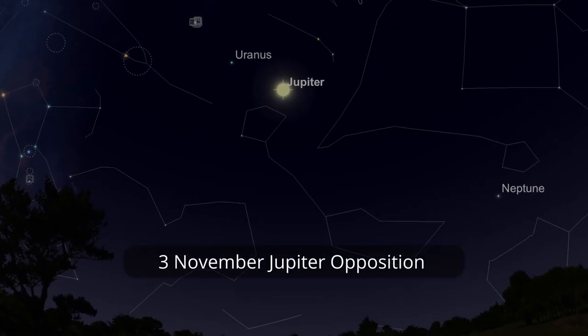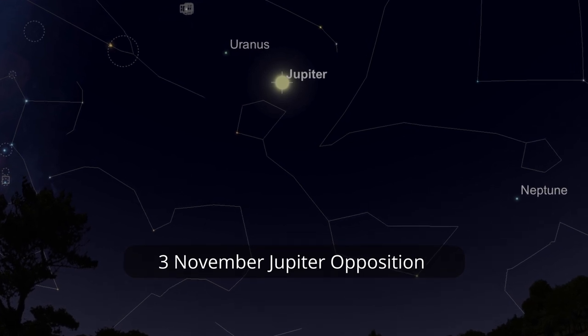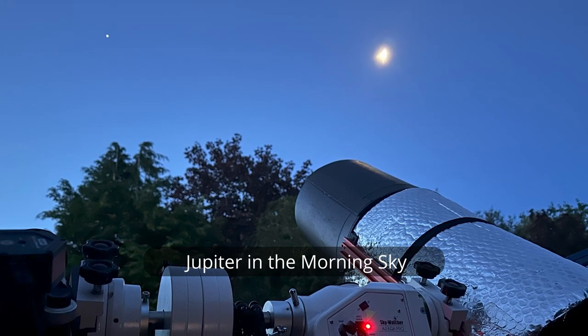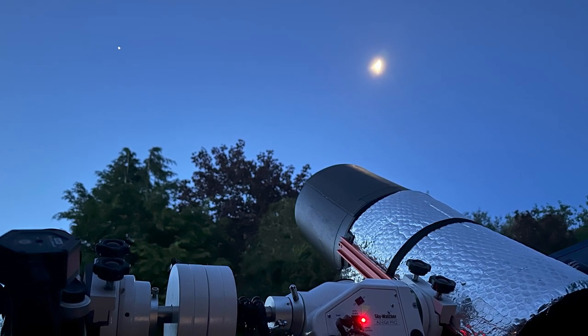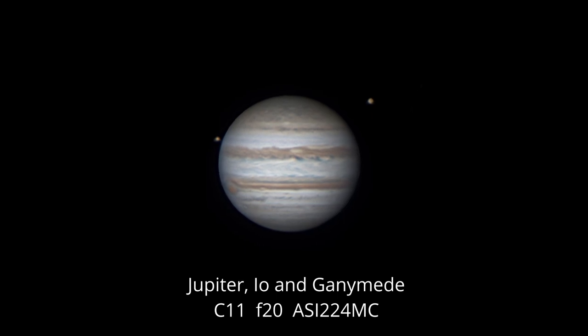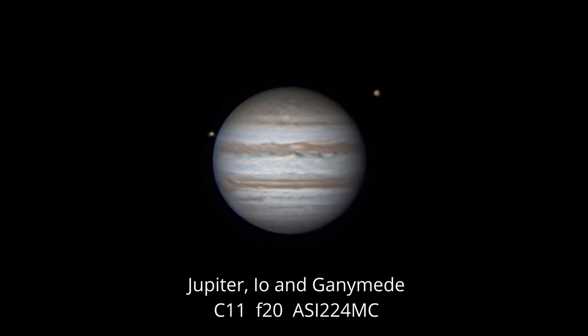Jupiter remains stubbornly in the morning sky as well. It doesn't get to opposition until November, until the 3rd of November. It's well worth an early start if you can catch that in the morning sky. You'll certainly see the moons in binoculars or a small telescope and with a bit of magnification you can pick out the storm belts and the atmospheric disturbances on this great planet.